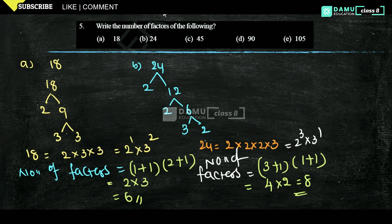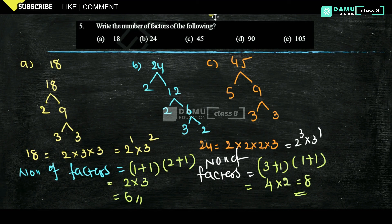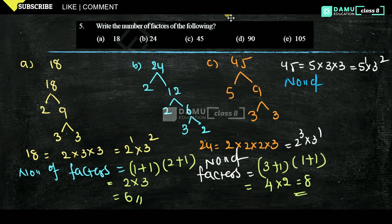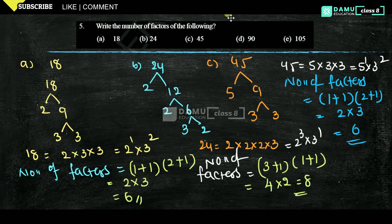Next is 45. Factorize: 45 = 5 × 9 = 5 × 3 × 3 = 5¹ × 3². Number of factors: (1+1) × (2+1) = 2 × 3 = 6 factors.